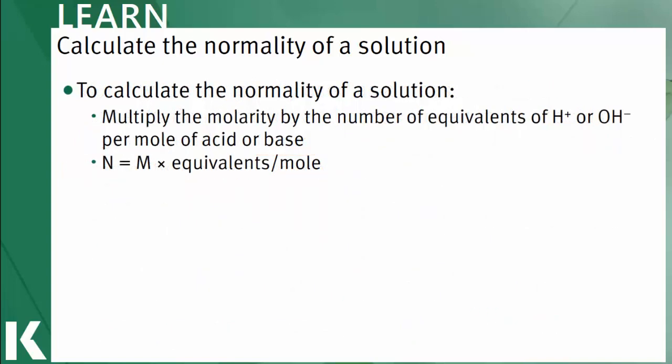To calculate the normality of a solution, the first step is to identify the number of equivalents. In the earlier slide, you identified H3A to have three equivalents of hydrogen ions. Then multiply the equivalents by the total molarity. For instance, if the molarity of H3A solution was 2 molar, the normality would be 2 molar multiplied by 3 to give us a 6 normal solution.